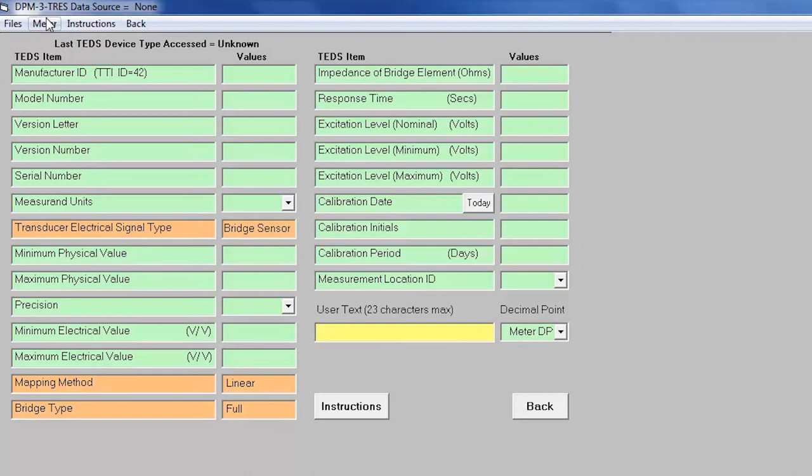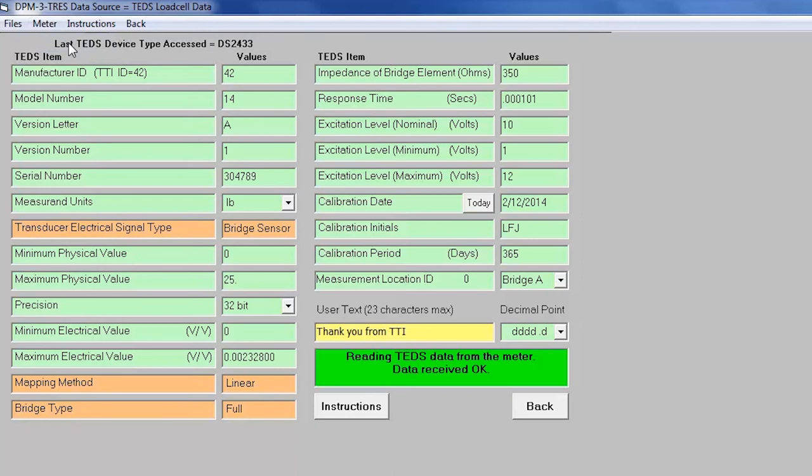From the control bar, click meter, then click read to populate the template. This allows you to edit any of the parameters in the template and write the new parameters to the EEPROM, or you can save to a file for future reference.